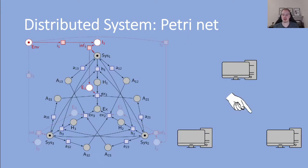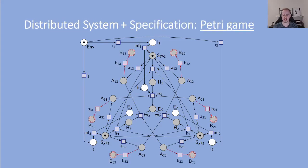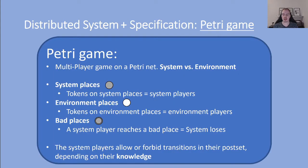Now we can also model an environment that non-deterministically chooses a computer. The chosen computer should host the server. The computer can get informed on this decision by participating in the corresponding inf transition. A program execution can now only happen if the computer chosen by the environment is hosting the server. We have added so-called environment places, colored white, and tokens on such places are environment players. For the specification, we add bad places to the net that the system players must not reach. Whenever a computer, meaning a system player, connects to a computer that is not chosen by the environment to host the server, its only possibility to proceed is then to take a transition to a bad place. So the system players should use their knowledge to allow or forbid transitions in their post set to fire and avoid reaching bad places.